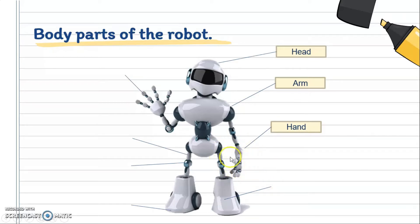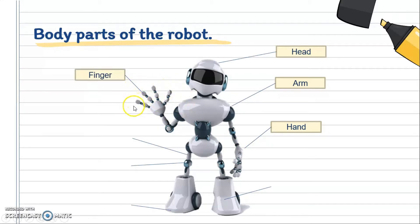Repeat after me: Hand. Very good! The whole part here is the hand. Next, we go further down to the fingers. So this is a finger. If we have 2 fingers or more than 1 finger, we say 'fingers' — we put the S at the back. If there is only 1, we say 'finger'.